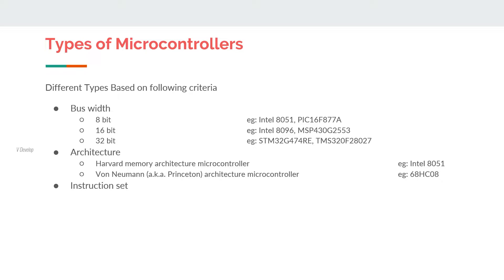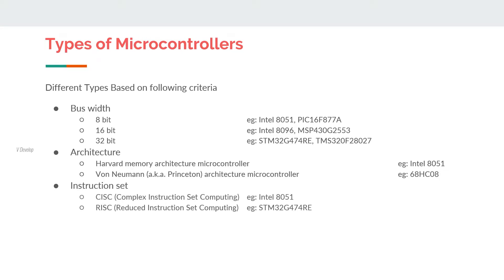Then we have another classification: CISC and RISC. It is based upon handling computer tasks using the instruction set used in the microprocessor. CISC uses a single long instruction to execute several low-level operations, while in RISC, bigger tasks are simplified into smaller ones to handle them easily. One advantage of RISC over CISC is that it uses very little power to execute instructions.